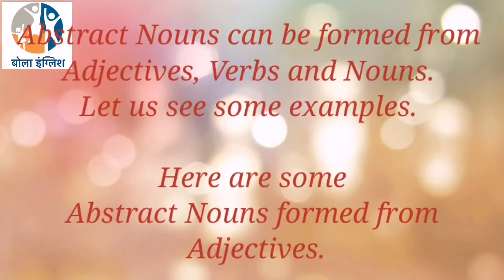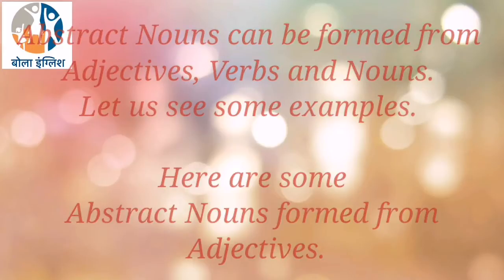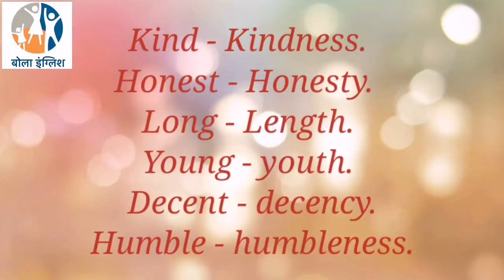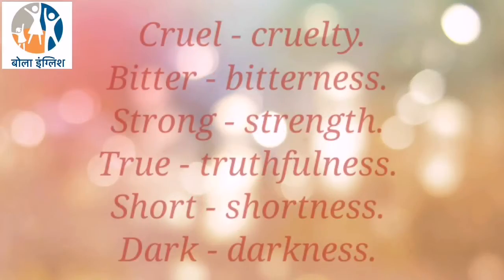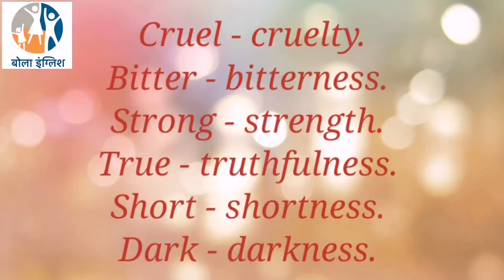Abstract Nouns can be formed from Adjectives, Verbs and Nouns. Here are some Abstract Nouns formed from Adjectives: Kind – Kindness, Honest – Honesty, Long – Length, Young – Youth, Decent – Decency, Humble – Humbleness, Cruel – Cruelty, Bitter – Bitterness, Strong – Strength, True – Truthfulness, Short – Shortness, Dark – Darkness.